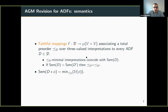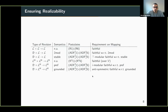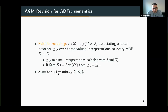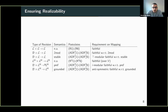The connection with revision is as follows: the interpretations selected by the semantics of the revised ADF can simply be obtained by selecting the minimal interpretations according to this pre-order that satisfy the formula by which we revise. This is essentially a generalization of the Katsuno and Mendelzon characterization of revision in terms of faithful orderings. One challenge — well known for revision of non-monotonic formalisms — is ensuring that the selection of minimal three-valued interpretations is realizable under the chosen semantics, requiring additional constraints on the mappings. For all common ADF semantics, we have requirements on mappings yielding representation results.